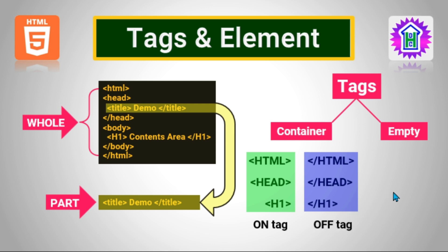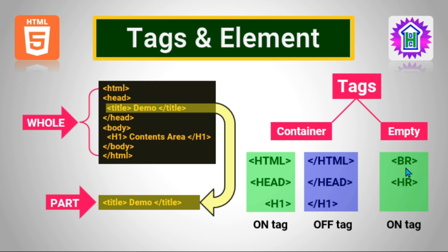In case of empty tags, there is no closing or off tag. Tags like BR, which is used for line break in HTML, and HR, which gives a horizontal rule or line across the body of the webpage, are called empty tags. They have only on tags and there is no concept of a closing tag or off tag. That is why they are called empty tags.